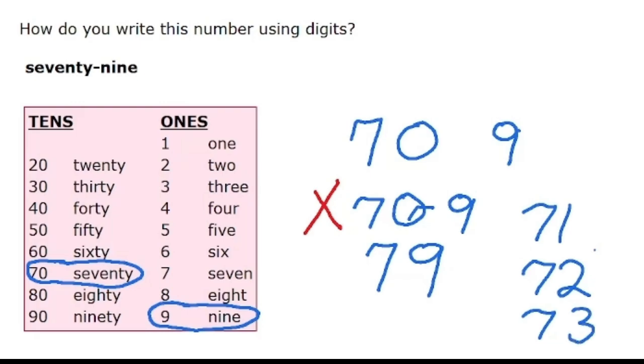So you know that 709 is incorrect. This is actually 709 that you're writing. So the correct way to show 79 is like this.